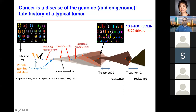Treatment can kill many cells, but some may harbor a mutation that makes them resistant, and the clone continues to grow, leading to recurrence. The recurrence continues to evolve and additional drivers may accumulate. A different treatment is then given, and again resistance can occur — this is the life history of cancers that are not cured.